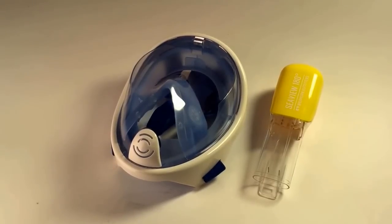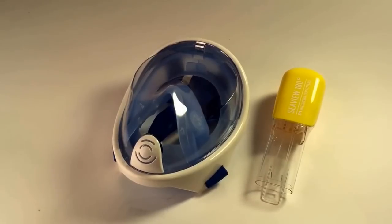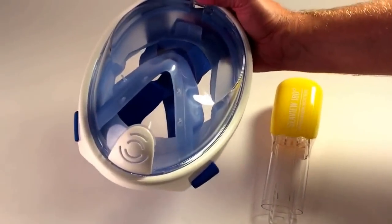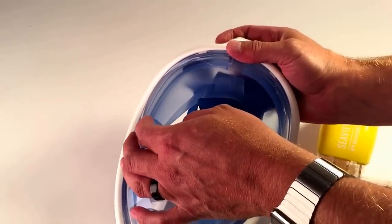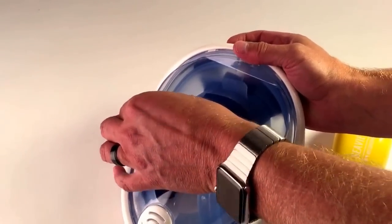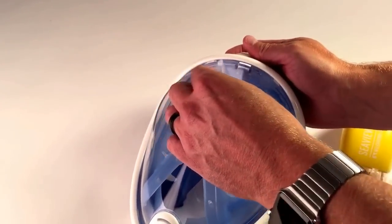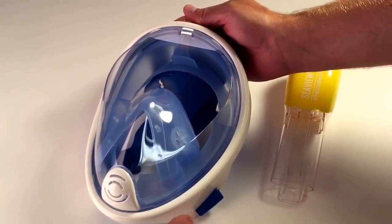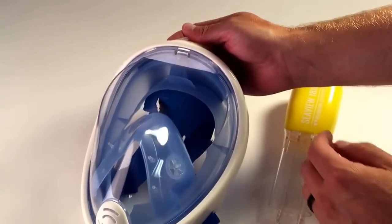Today we're going to show you how to prepare your Seaview 180 snorkel mask for first use. The first thing you'll want to do is take the mask and peel off the little film that protects the plastic. Then you'll want to wipe the mask down with a rag.